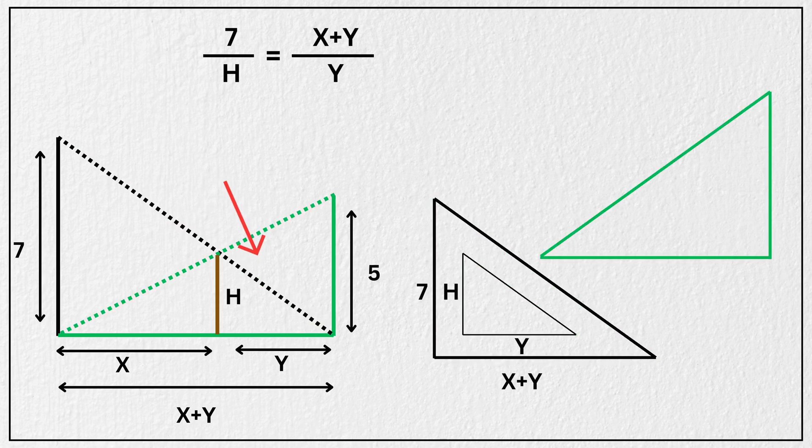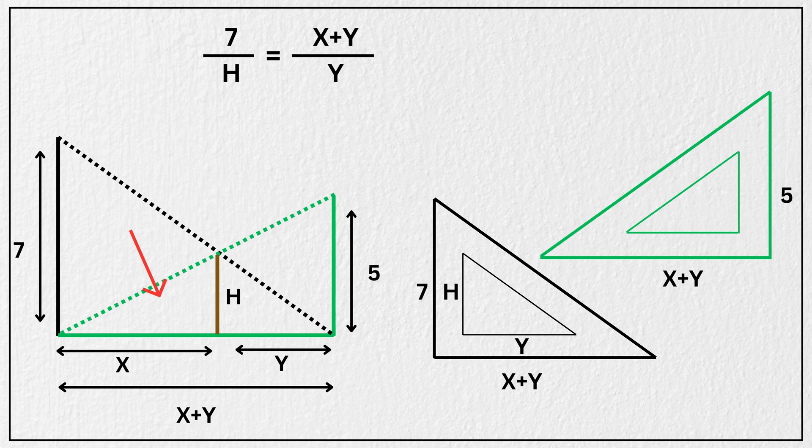Now look at the triangle formed with the 5 meter pole. Its base is again x plus y, and its height is 5. This smaller triangle inside it has base x and height h.